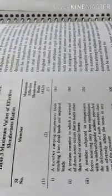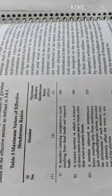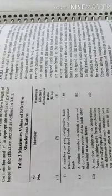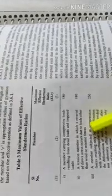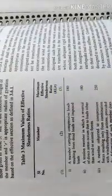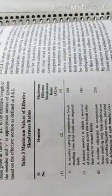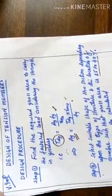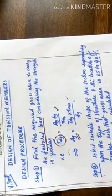The slenderness ratio for the assigned section must be calculated and checked against these limits. In a tension member, buckling may not occur normally, but when load reversal happens — tension becoming compression or vice versa — the slenderness ratio check becomes important. This aspect must be verified during design.